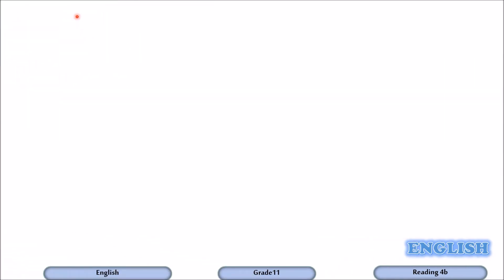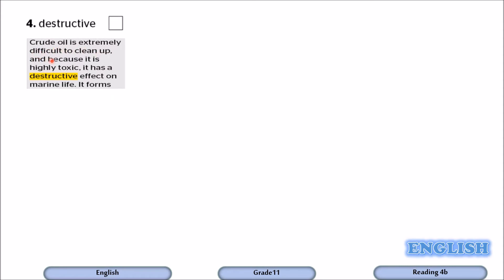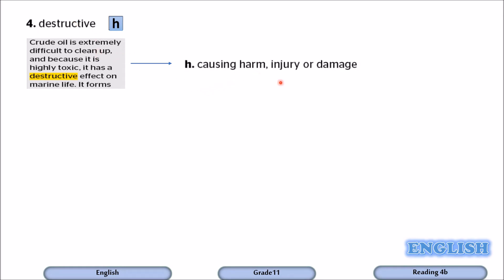Number four: destructive. Crude oil is extremely difficult to clean up, and because it is highly toxic — poisonous — it has a destructive effect on marine life. So destructive means something negative. It goes with H. The definition: an adjective meaning causing harm, injury, or damage.